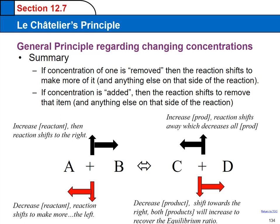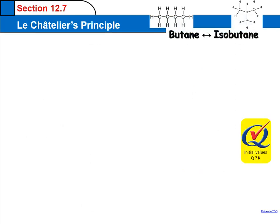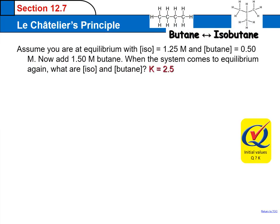How does this look in terms of a problem? Let's consider the equilibrium between butane and isobutane. Butane is on the left-hand side, the reactant, and isobutane is on the right side. These are four carbon hydrocarbons. Let's assume you're at equilibrium with isobutane at 1.25 molar and butane at 0.5 molar. Now disturb the equilibrium by adding 1.5 molar butane. When the system comes back to equilibrium, what are the concentrations of isobutane and butane? The equilibrium constant K is 2.5.